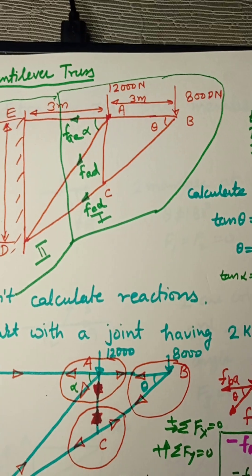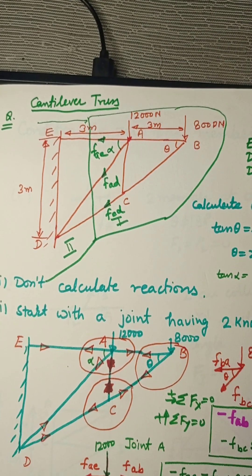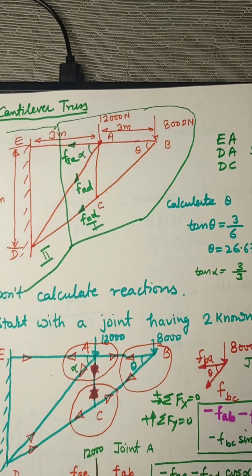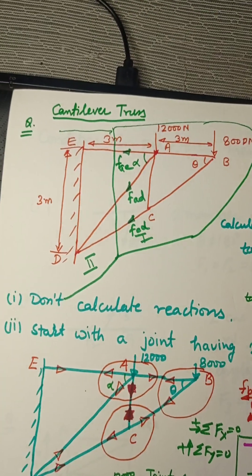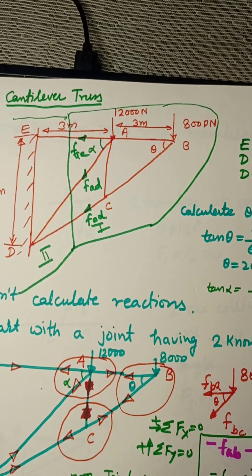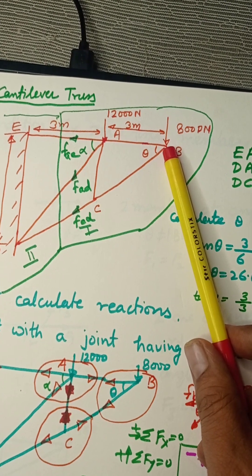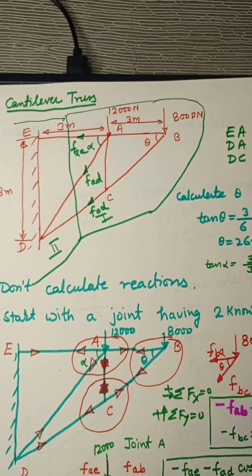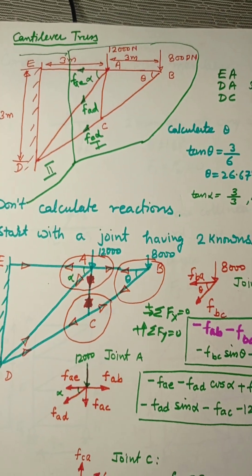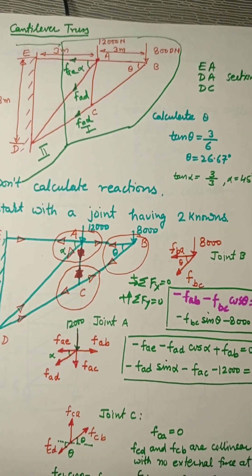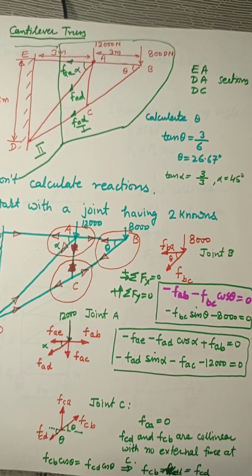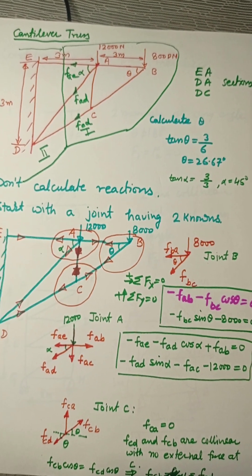The key points to remember: in a cantilever truss using method of sections, select the free side, not the supported one. In method of joints, start with a joint that is free and has only two unknowns. Try to solve more questions on cantilever truss so it is not difficult when it comes. In the next lecture we will discuss how to identify zero force members and some typical questions. Thank you all.